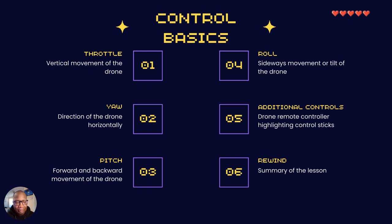Control basics. Like we mentioned before, throttle is the vertical movement, yaw is the direction horizontally, pitch is moving back and forth, roll is moving sideways, and we'll cover additional controls, and we'll recap this lesson with a rewind.